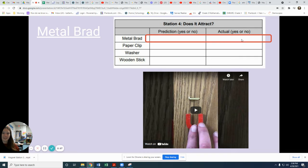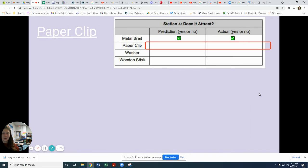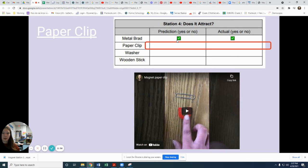So make sure you put yes in the actual column. Was your prediction correct? Okay, now you should be done with the metal brad. You should have an answer in both of those boxes up there for the prediction and actual.